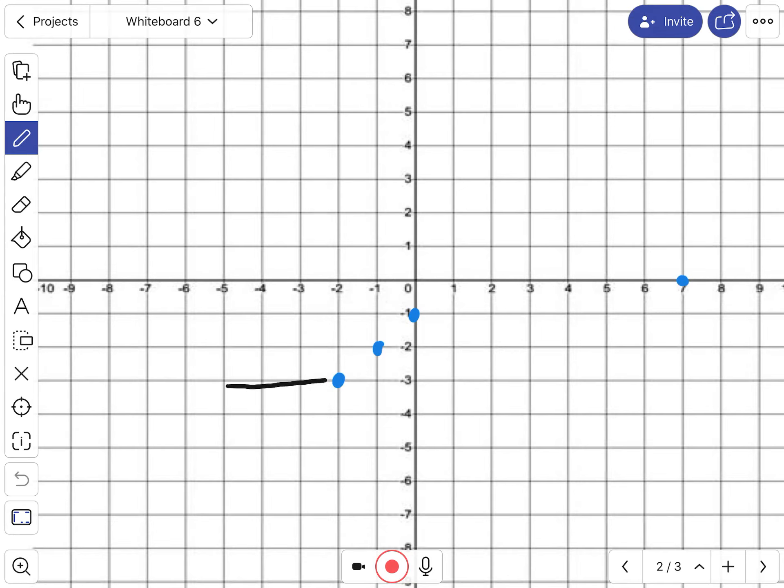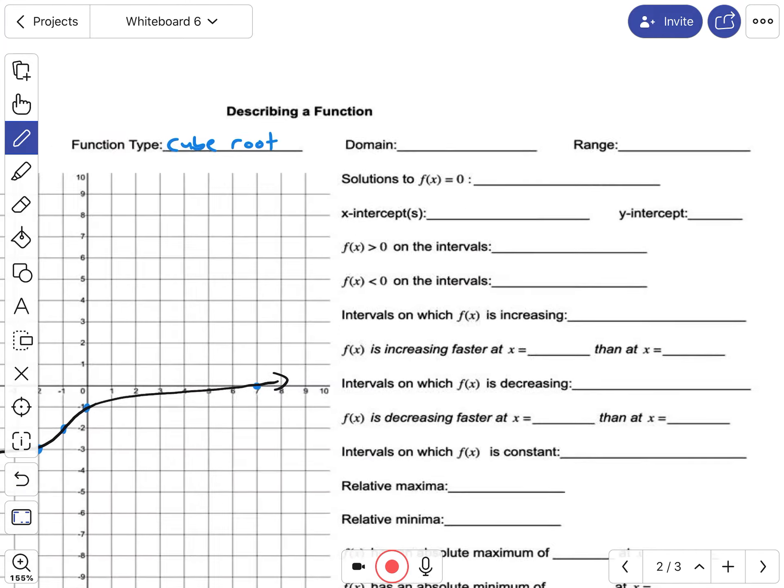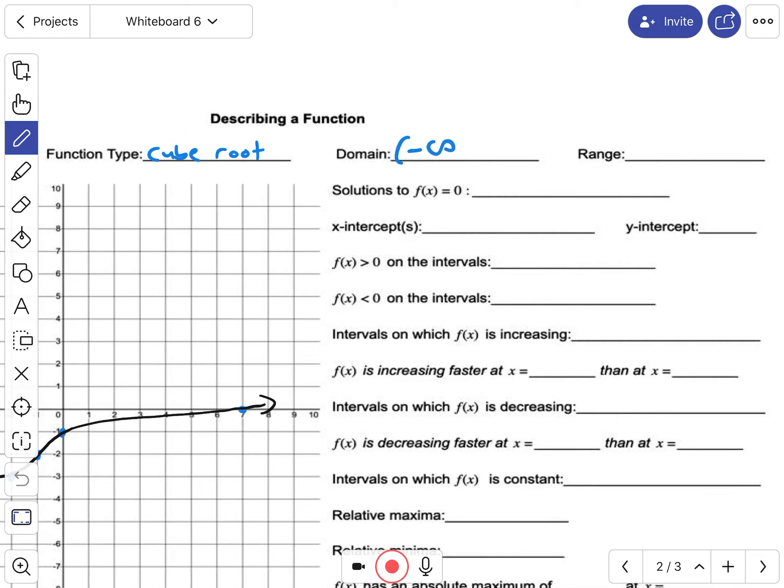Okay, so the domain is how far left and how far right. Well, the arrow left and arrow right indicate that it is infinity in both directions. But going left, that's going to be negative infinity, so it goes left forever, right forever.